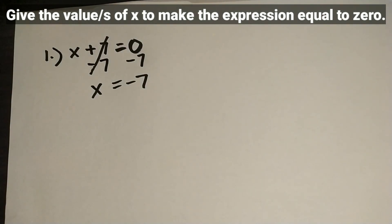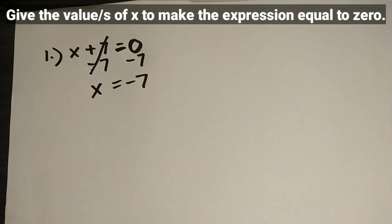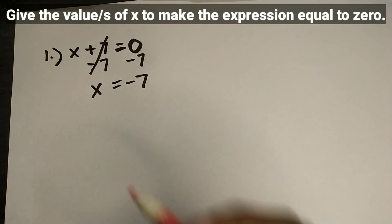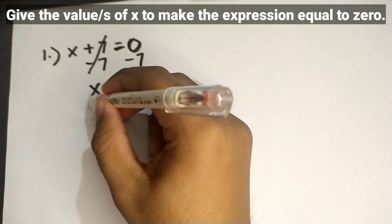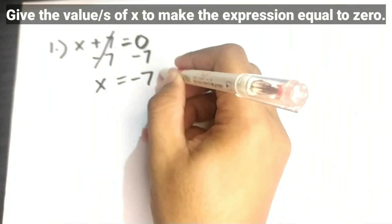So positive 7 minus 7 is 0, and 0 minus 7 is equal to negative 7. Our answer now is x is equal to negative 7.